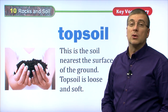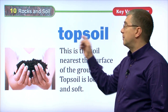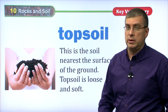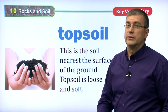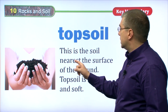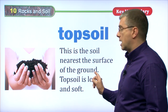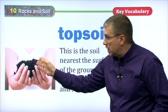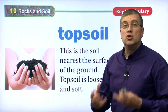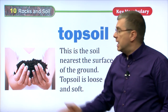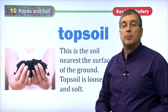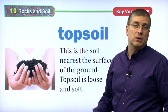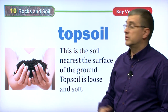Another type of rock or soil that we're talking about here is topsoil. We've talked about this before. Topsoil is very, very important to us. We use topsoil to grow plants. This is the soil nearest the surface of the ground. Topsoil is loose. It's soft. It's also rich in nutrients that plants need to grow. If there's not a lot of topsoil, plants will not grow well. In the desert, there is no topsoil, so plants don't grow there because there's no moisture and no topsoil.